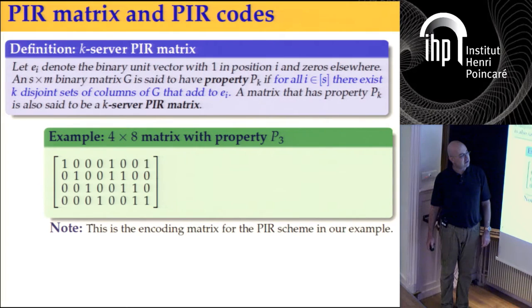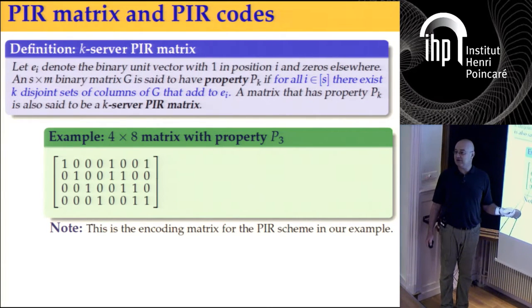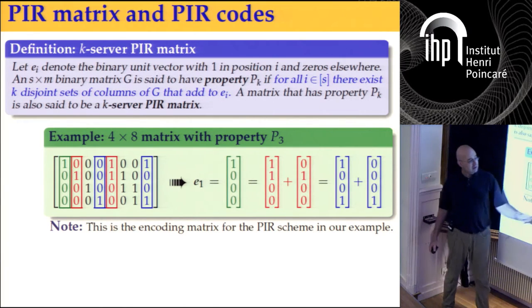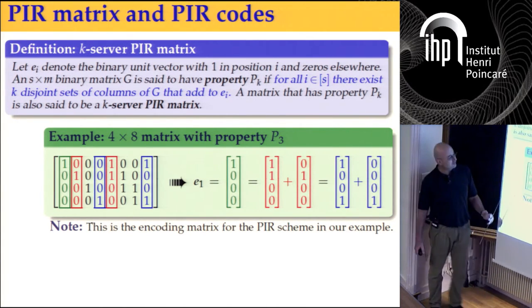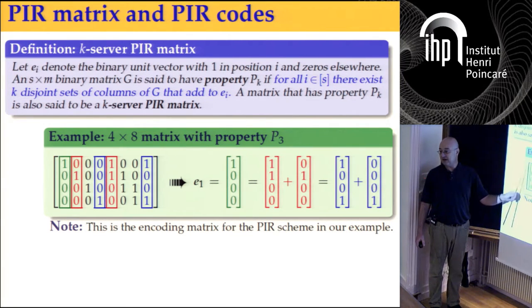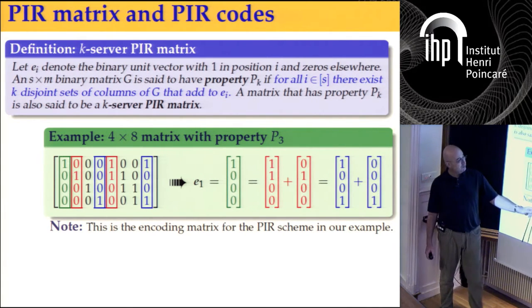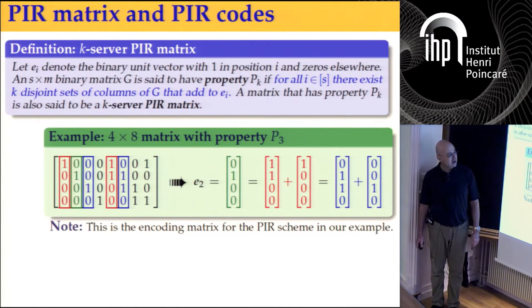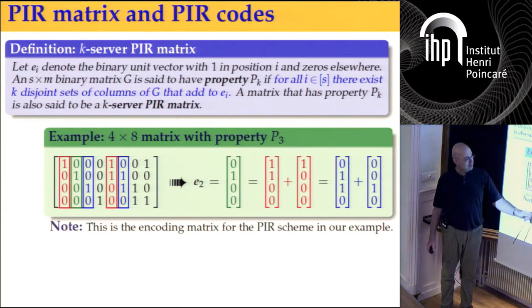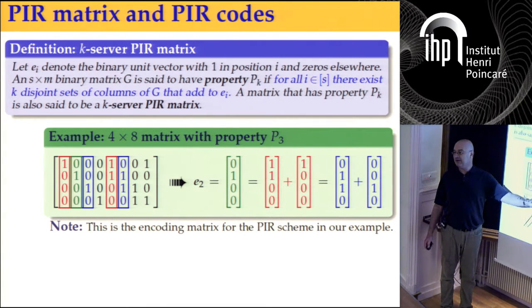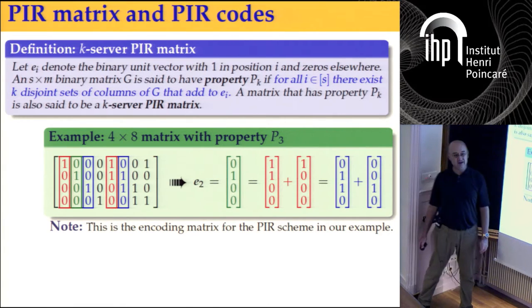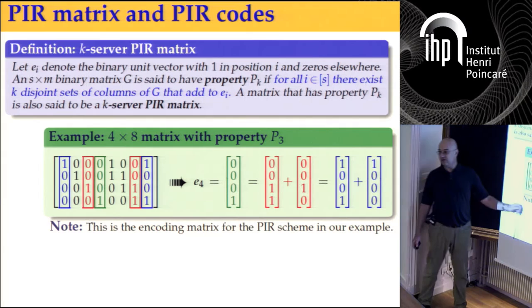Here's the matrix from the previous slide. For e1, it appears itself as a column (systematic matrix), and then there's a pair of columns that adds up to e1, and a blue pair of columns that also gives e1 — all disjoint. For e2, same thing. Notice the total number of columns used is five — so we used answers from five servers and ignored the others.